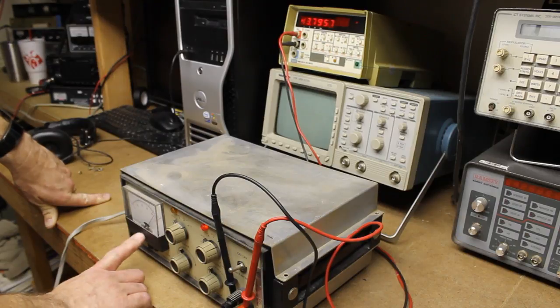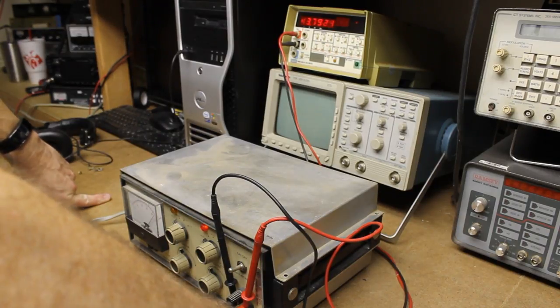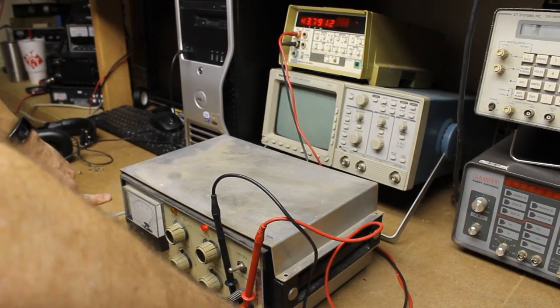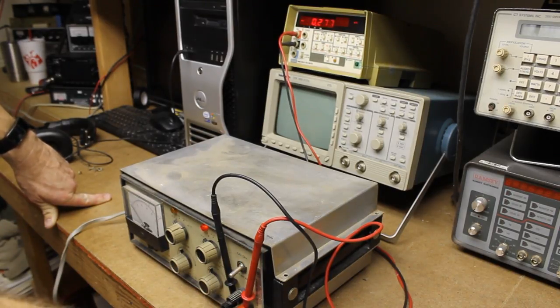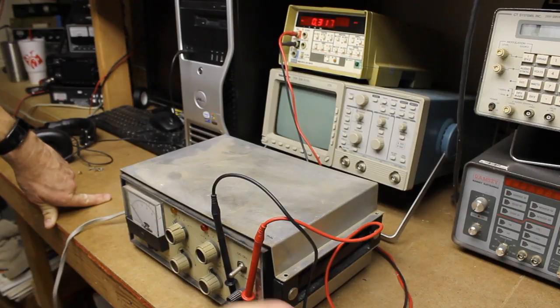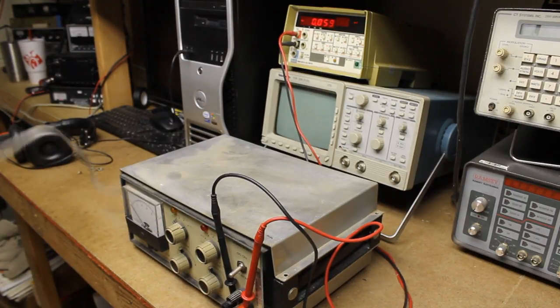Alright. We do have good meter movement on it, so it looks like this is a working power supply. We'll switch back to DC off, back to AC off, and we'll unplug.